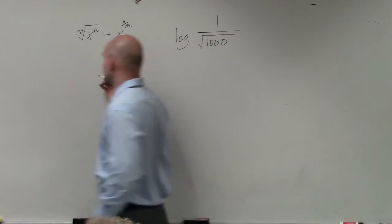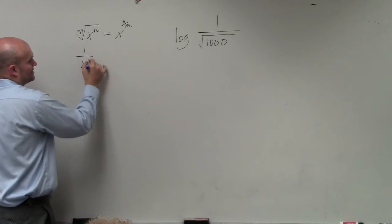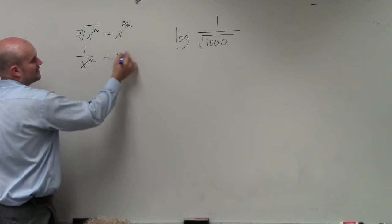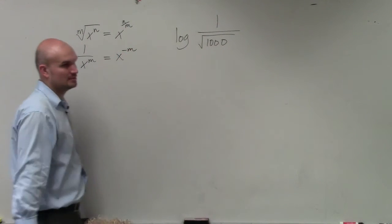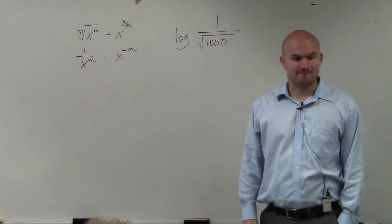The next one: we don't like having numbers in our denominator either. So 1 over x to the m, we can always rewrite it in the numerator but just by using negative powers. Is everybody following with that?